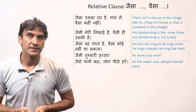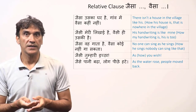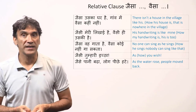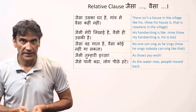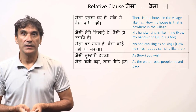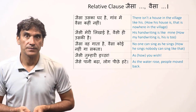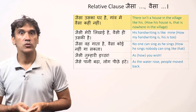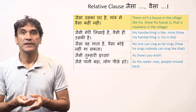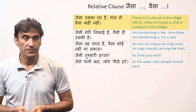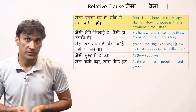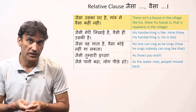The next relative phrase is jaisa-vaisa. Jaisa behaves like an adjective, meaning it can be feminine — jaisi — and masculine plural — jaise. Jaisa can also act as an adverb. For example: 'Jaisa uska ghar hai, gaon mein vaisa kahi nahi' — there isn't a house in the village like his.